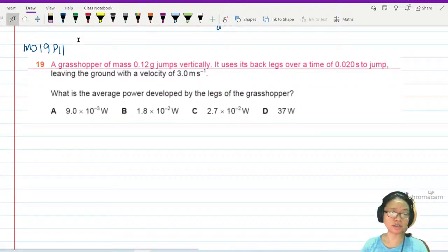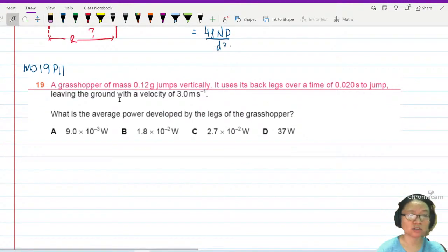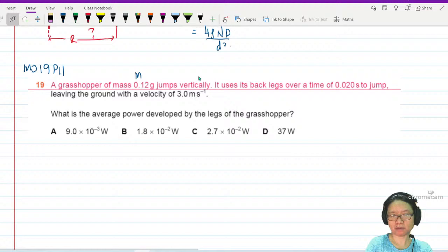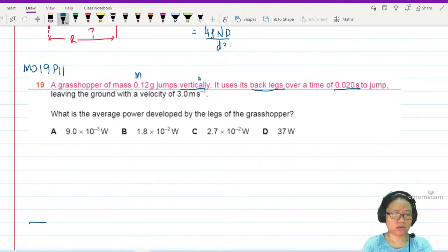Okay, in this question we are going to look at a grasshopper. This grasshopper has a mass of 0.12 grams, jumps vertically, and uses its large back legs over a time of 0.02 seconds to jump.